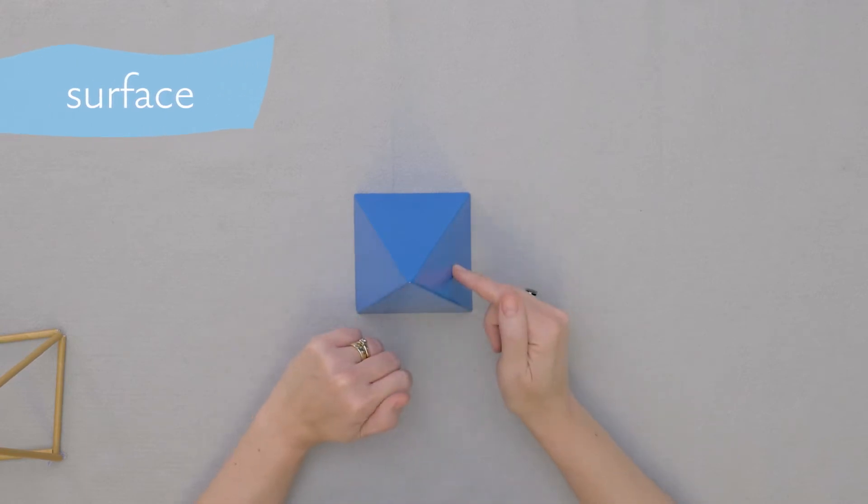And each one of these parts of the surface that I can see are faces of the solid. This is a face and this is a face. And the bottom face is called the base of the solid.